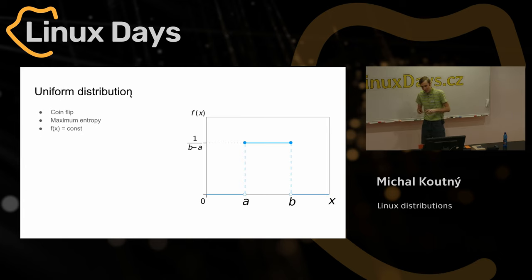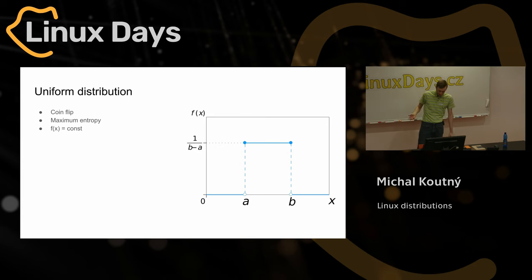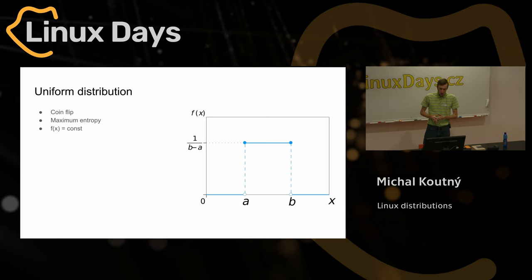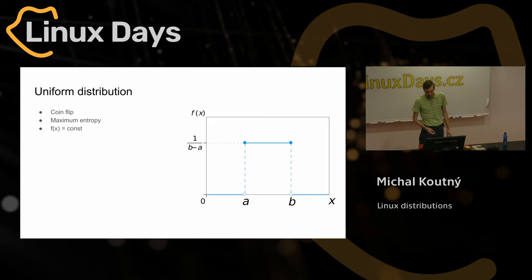The first basic distribution is uniform distribution. In its continuous form, it assigns the same probability to every number in a given interval between boundaries A and B. We can also have a discrete version — for example, a coin flip or rolling dice are also uniform distributions. An interesting property is that this is the distribution that has maximum entropy. We'll explain the practical impact of that later.